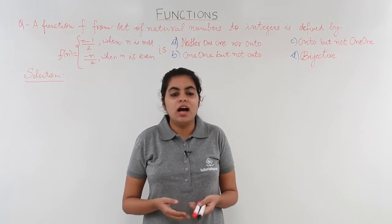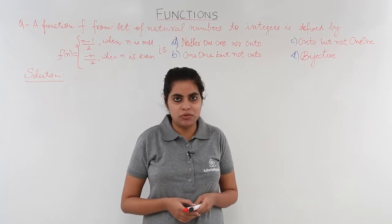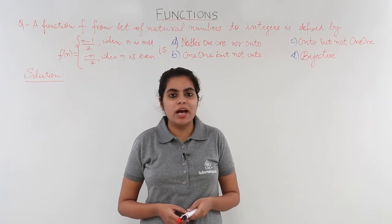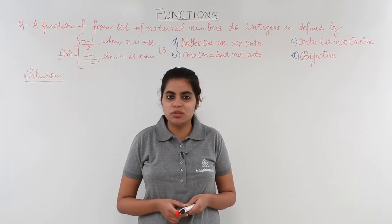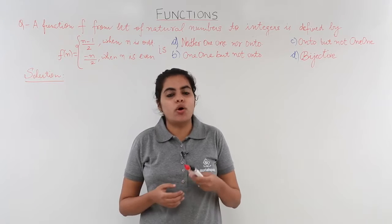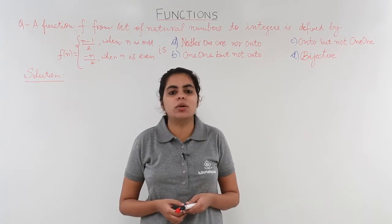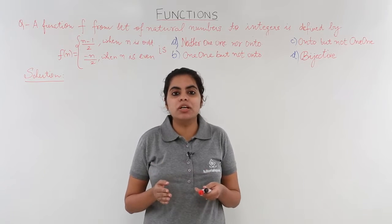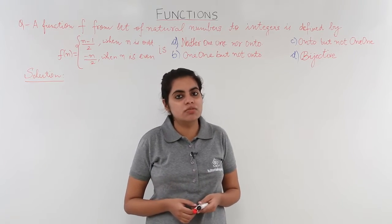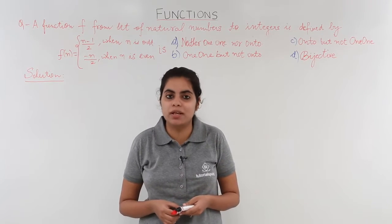In this video, we see another numerical based on bijective function. We have already seen what a bijective function is, and one numerical question based on it. This is the continuation of that series — the second numerical based on bijective function. Bijective function means one-one onto function. Before watching this video, I advise you to see the video on bijective functions and the first numerical.